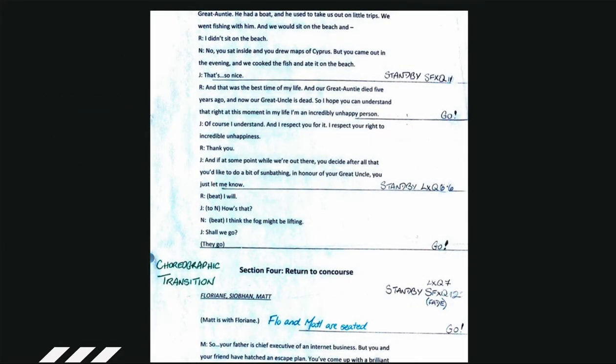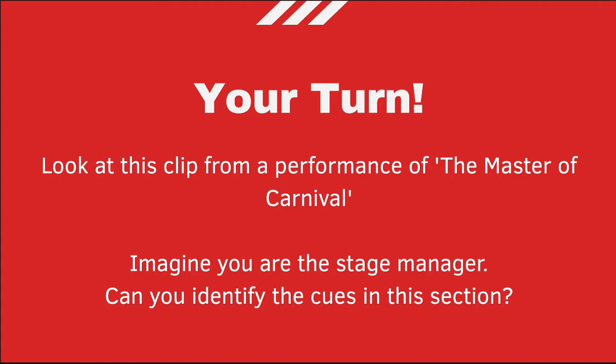Here is another excerpt from a prompt book showing standby SFX Q1, Q11, then go; standby LX Q6 and 6.6; go, go, go. Now it's your turn — we're going to look at a clip from the National Theatre Arts Company's performance of the Master of Carnival. Imagine you are the stage manager and identify any cues in this section — a cue being a trigger for something to happen with sound or lighting.